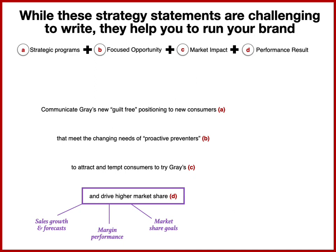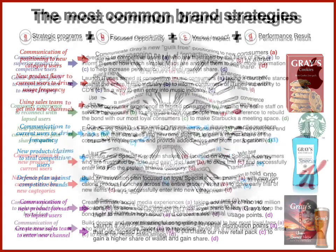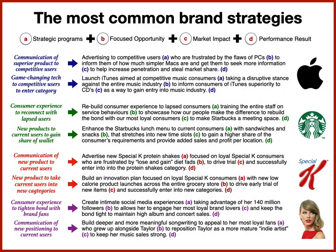In an average brand plan, I'd probably have three of these statements, and then I would build my plan around these strategies. Within our training program, we have some of the most common brand strategies — whether that's communication, new products, usage frequency, defense plans against competitors, and some fictional brands. We also look at some of the more famous strategies, whether that's Apple, Starbucks, Special K, or even Taylor Swift.